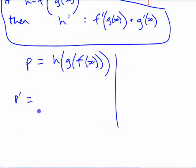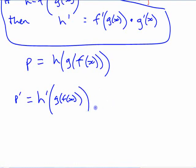It would be h prime with respect to whatever's inside there, g, f, x. And then it's going to be times g prime with whatever's inside of that function, f of x, and then it would be times f prime of x.